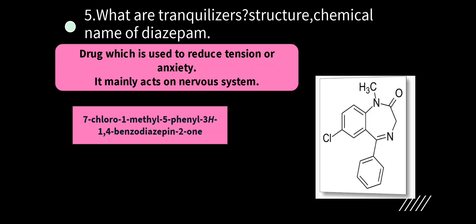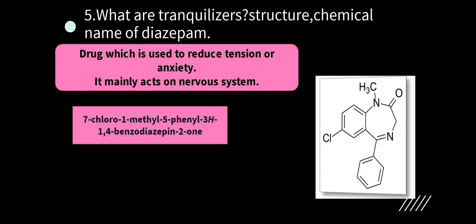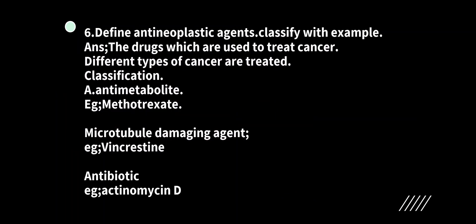Question on tranquilizers: structure and chemical name of diazepam — very important. Tranquilizers are drugs used to reduce tension or anxiety, mainly acting on the central nervous system. Chemical name of diazepam: 7-chloro-1-methyl-5-phenyl-3H-1,4-benzodiazepin-2(1H)-one. The structure has two benzene rings and one seven-membered ring with two nitrogen atoms and a double-bond carbonyl. Practice this once or twice to get it right.